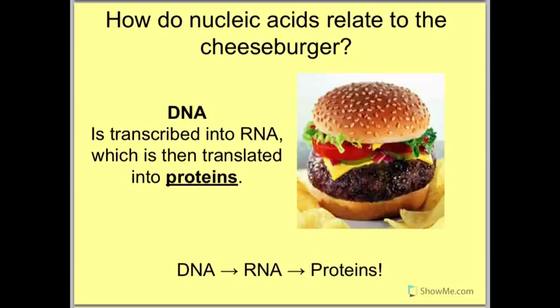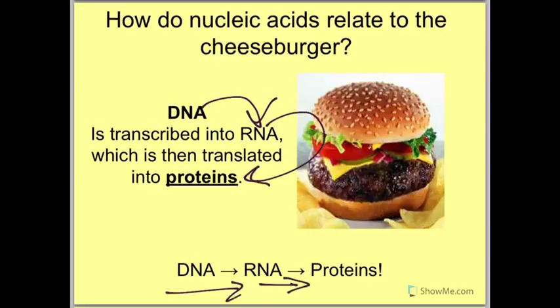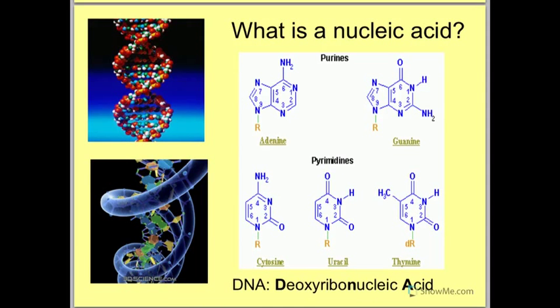We're missing one organic compound — nucleic acids. How do nucleic acids relate to the cheeseburger? What we'll learn later is that DNA is transcribed into RNA, which is then translated into proteins. DNA to RNA to proteins is the central dogma — it's really important in biology. What are nucleic acids? All DNA and RNA are made of the same five nucleic acids: adenine, guanine, thiamine, uracil, and cytosine. The structures of all of these include carbon, hydrogen, oxygen, nitrogen, and phosphorus.